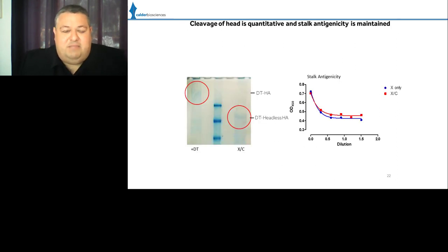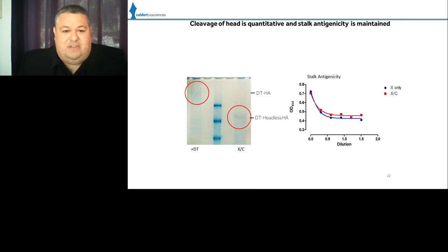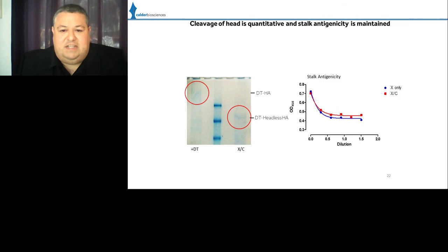We've optimized the proteolytic cleavage reaction and now have near-quantitative cleavage of the molecule. After DT crosslinking, the protein is locked in intermolecular crosslinks and shifts into the trimeric state. After proteolytic cleavage, we observe near-quantitative conversion and cleavage of the globular head domain, with a size shift corresponding to the molecular weight lost between the two proteolytic cleavage sites. Stalk antigenicity is maintained between the crosslink-only and the crosslink-and-cleaved proteins.